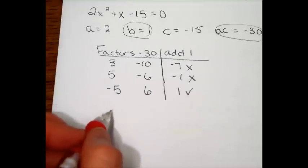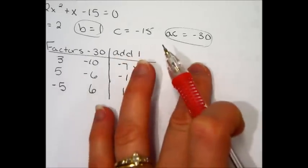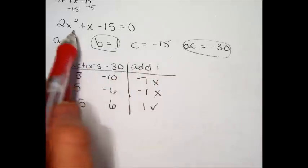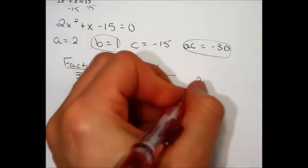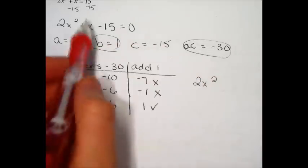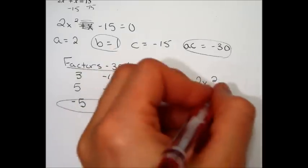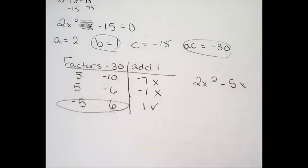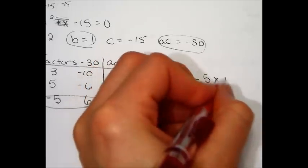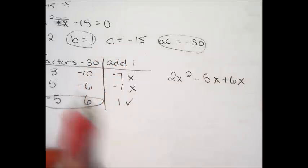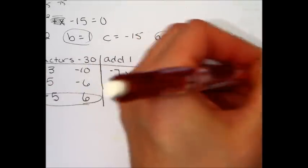It's time to rewrite. I'm going to rewrite right here towards the side. Keep the 2x squared. No longer do you keep this middle plus x. Change it to minus 5x and plus 6x. Then finish by writing minus 15 equals 0.